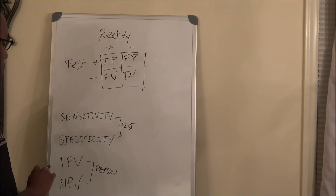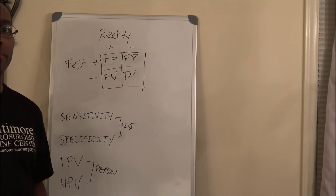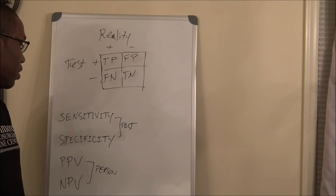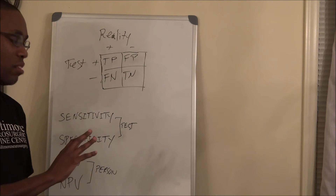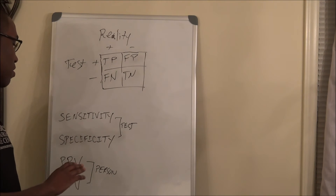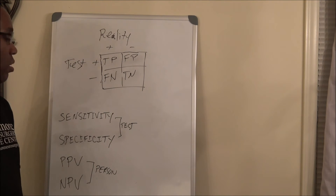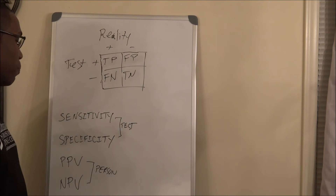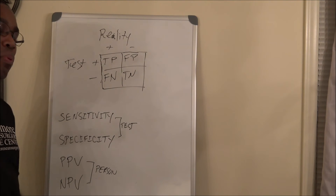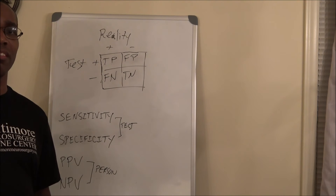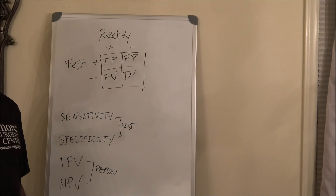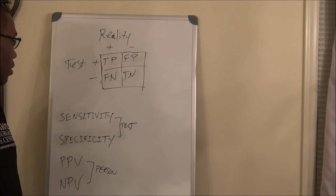For positive predictive value, what is the probability that the person has the disease if the test is positive? For negative predictive value, what is the probability that the person does not have the disease if the test is negative?